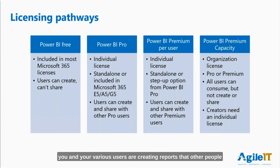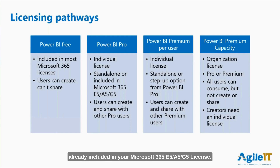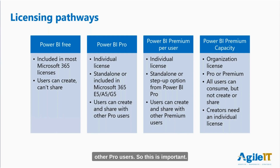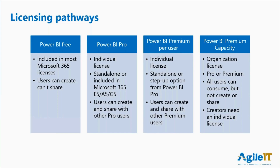You can get a lot of information there, but you just can't share that report with anyone else. So once you get to the place where you and your various users are creating reports that other people need to see, you're in the Power BI Pro level. This is an individual license — you can do it as a standalone, or it's already included in your Microsoft 365 E5, A5, or G5 license. Users can create and share with other Pro users. This is important: even if you're not going to create content, if you're going to consume content someone else has made, both of you are going to need that Power BI Pro license.